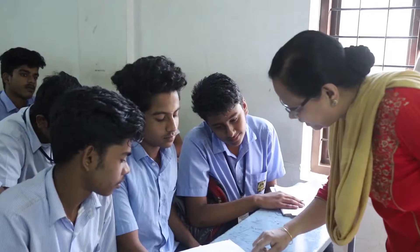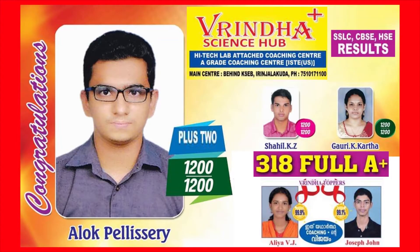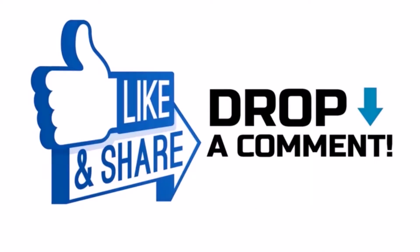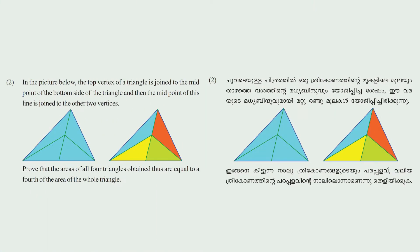In the picture below, the top vertex of a triangle is joined to the midpoint of the bottom side of the triangle, and then the midpoint of this line is joined to the other two vertices. Prove that the area of all four triangles obtained are equal to one fourth of the area of the whole triangle.